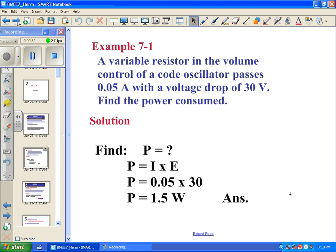A variable resistor in the volume control of a code oscillator passes 0.05 amps with a voltage drop of 30 volts. How much power is it consuming or dissipating? Pretty easy. If we have the voltage and we have the current, we multiply them together. So 0.05 times 30, 1.5 watts. Nice and simple.